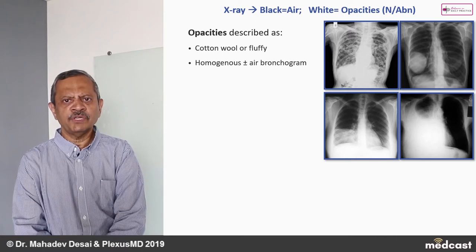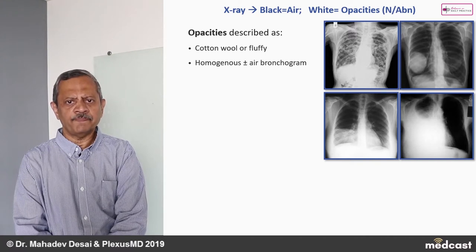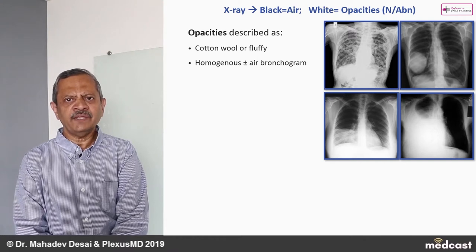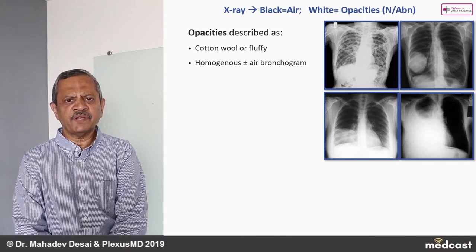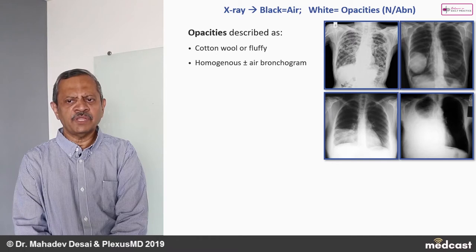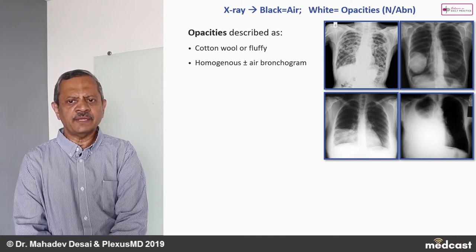Homogeneous opacity is something you are likely to encounter most often. It means the whiteness of the entire opacity in your view is uniform. It may also show an air bronchogram — within that white homogeneous opacity, you might find a few streaks of radiolucency. We have shown three different types here: one rounded opacity without air bronchogram, one dense homogeneous without air bronchogram, and one opacity with air bronchogram.